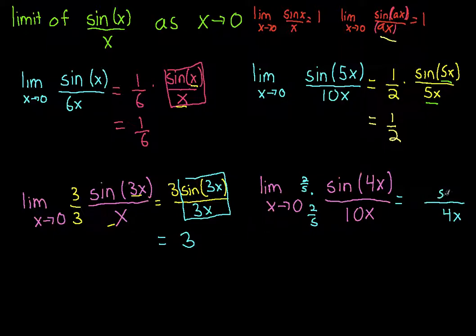I have sin(4x) in the top, and this is multiplied by 2/5. This 2/5 combined with the 10 gives us 4x in the denominator. Now I have sin(4x)/4x, which equals 1, so the answer is 2/5.